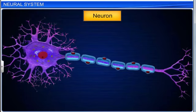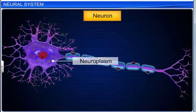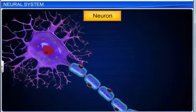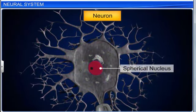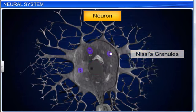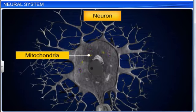It contains granular cytoplasm, also called neuroplasm. The neuroplasm contains a large, spherical nucleus. Granular bodies called Nissl's granules help in protein synthesis. A large number of mitochondria provide high energy for the conduction of impulses.